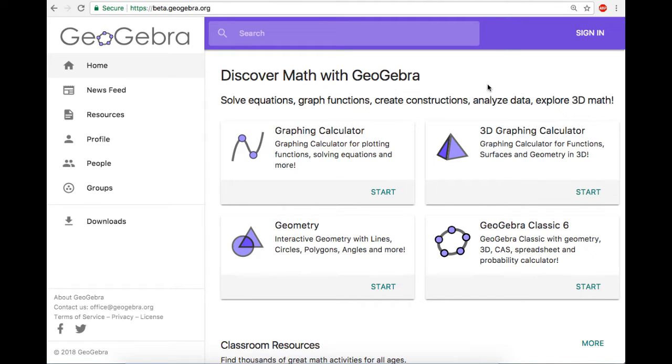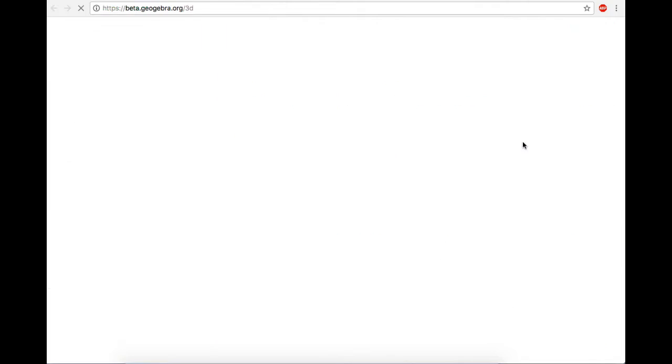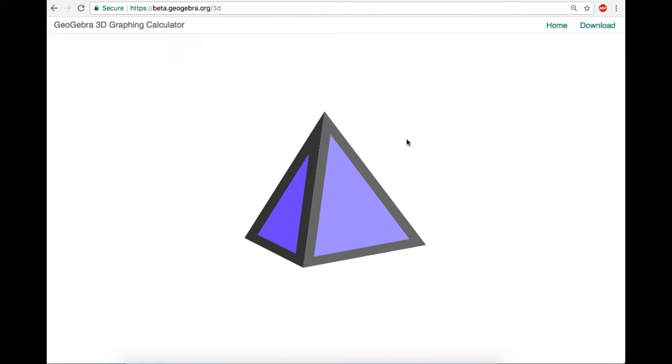Okay, in this video I'm going to show you how to use GeoGebra to visualize a solid of revolution. I'm at beta.geogebra.org, the beta version is usually the most cutting edge, and I find it works better for what I'm about to do. I'm gonna click on 3D graphing calculator, and it's gonna launch this.